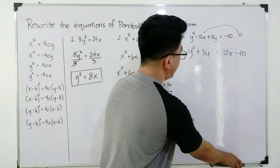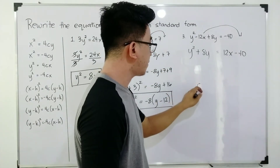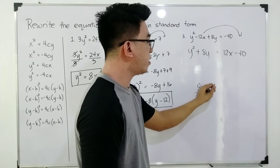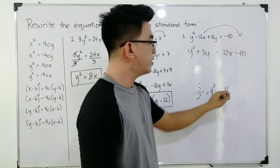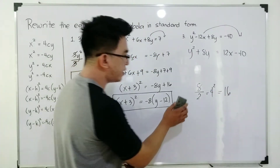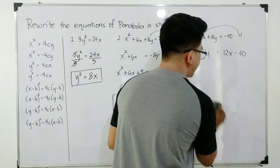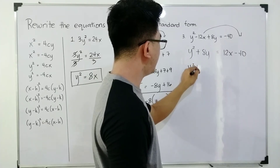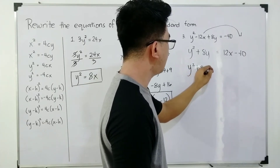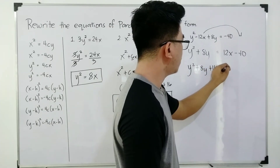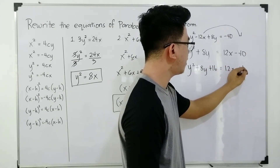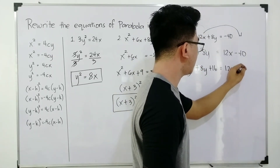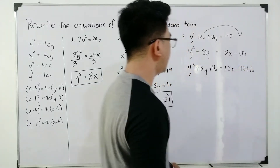Our target is to transform this into a perfect square trinomial by performing completing the square. Get the coefficient of y, which is 8, then divide by 2, which equals 4, and then square the quotient — that gives you 16. So we need to add 16 to both sides of the equation. We have y² + 8y + 16 = 12x - 40 + 16.